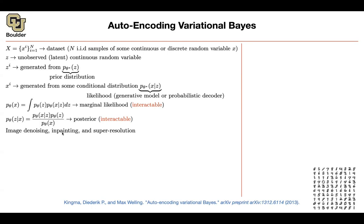Super resolution has applications in video games — it can help transfer low-resolution images to users, and then on their computer turn those images into high resolution, showing high quality video. Inpainting refers to old images where some part is missing or removed, and you want to imagine what would appear in that part. So this has real applications. Our core problem is that the marginal likelihood and the posterior are both intractable.